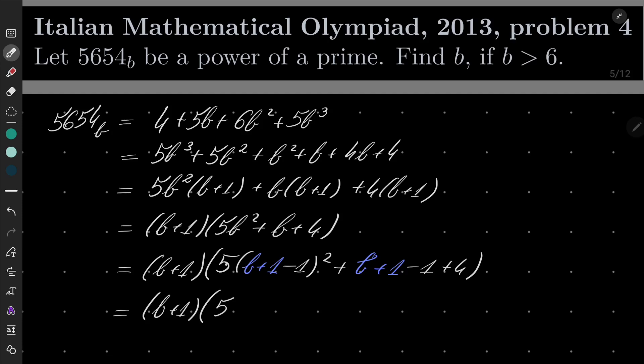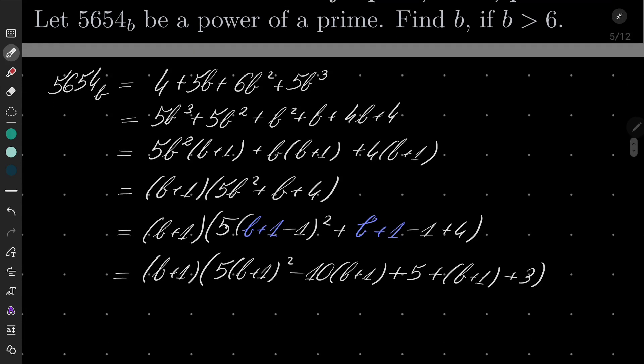Now we have B plus 1 times 5 times the square of a difference. We have 5(B+1)² - 10(B+1) + 5 + B + 1 + 3. After simplification we have (B+1)(5(B+1)² - 9(B+1) + 8).